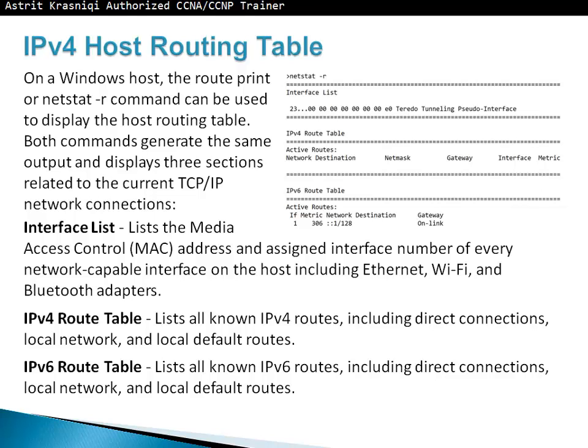The host IPv4 routing table can be viewed by typing a command in Windows: route print or netstat -r. Both commands generate the same output and have three sections. It will have the interface list — a list of the media access control addresses and assigned interface numbers of every network-capable interface, including Ethernet, Wi-Fi, and Bluetooth.